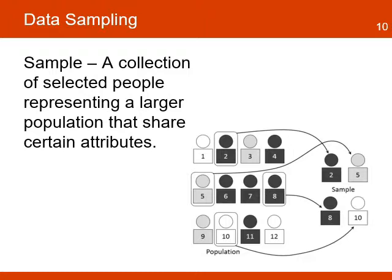An important concept to understand in data management is data sampling. Sampling is the identification of a group of people that the project will select to collect data. The data collected from this group can be used as a representation of the larger population the project is working with. The idea of sampling is to reduce the effort and cost of data collection.